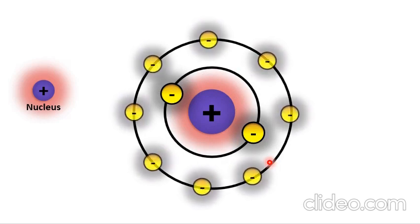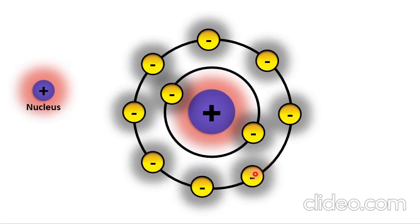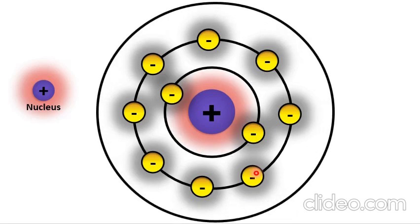The second energy level is called the L shell. It is divided into the 2s and 2p sub-shells: the 2s sub-shell has a maximum of two electrons and the 2p sub-shell has a maximum of six electrons, giving the L shell a total of eight electrons. The third energy level, the M shell, has a maximum of 18 electrons.